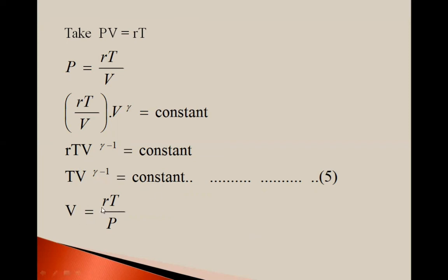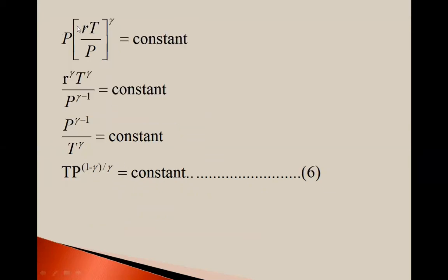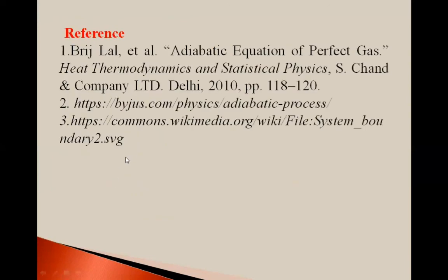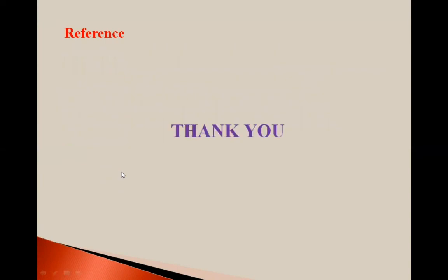Taking V = RT / P and substituting into P V^gamma = constant: P × (RT / P)^gamma = constant, giving R^gamma × T^gamma / P^(gamma − 1) = constant. Therefore P^(gamma − 1) / T^gamma = constant — this is equation 6, the T-P adiabatic relation. References used for this presentation are acknowledged. Thank you.